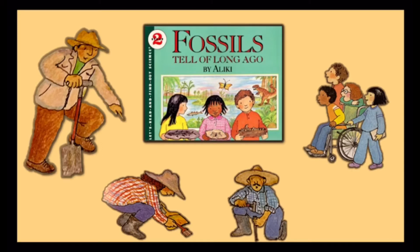Once upon a time a huge fish was swimming around, when along came a smaller fish. The big fish was so hungry it swallowed the other fish whole. The big fish died and sank to the bottom of the sea. This happened 90 million years ago.